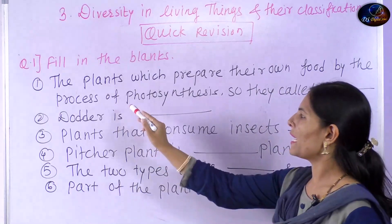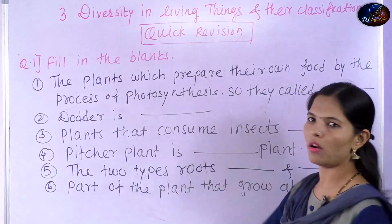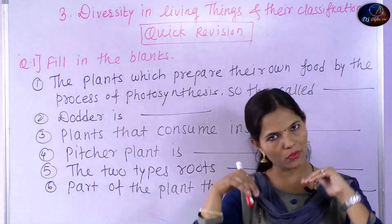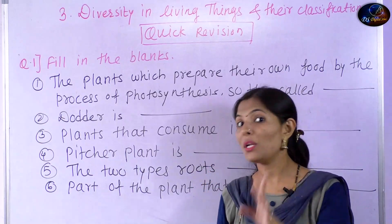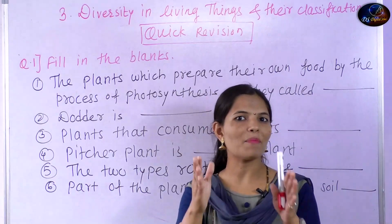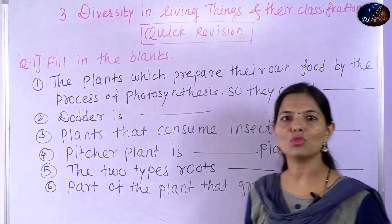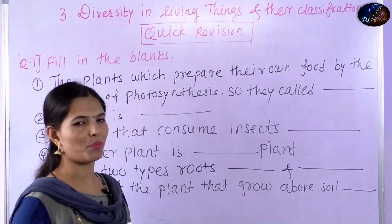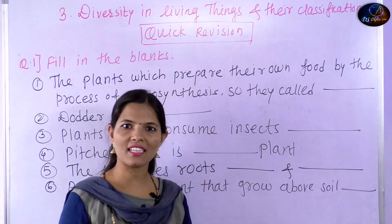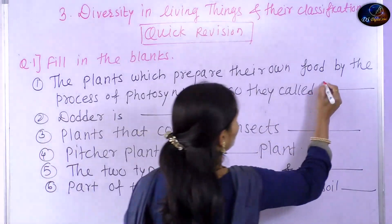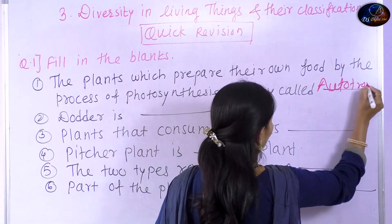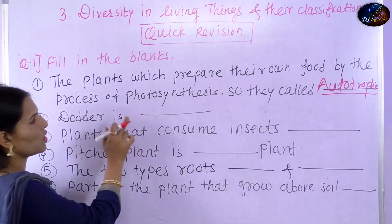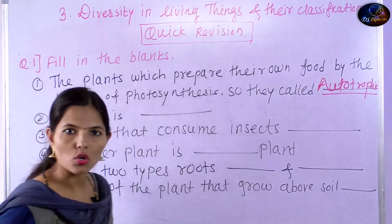The plants which prepare their own food by the process of photosynthesis — so they are called? This question is common. What is your answer? Autotrophic. That is, plants which prepare their own food by the process of photosynthesis are called autotrophic.